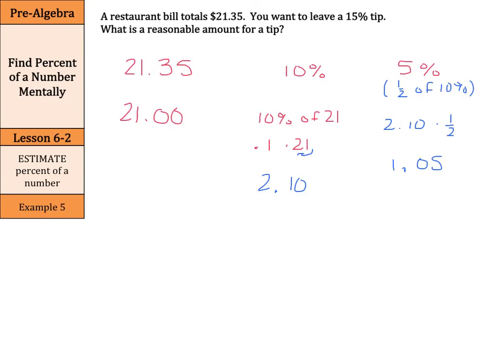Now see what we've done. We've estimated our total bill at $21. We found 10% is $2.10. 5% is half of 10%. So if we find half of the 10% amount, we have these two numbers now. $2.10 and $1.05. Add these two numbers up, and you get $3.15 for the tip.